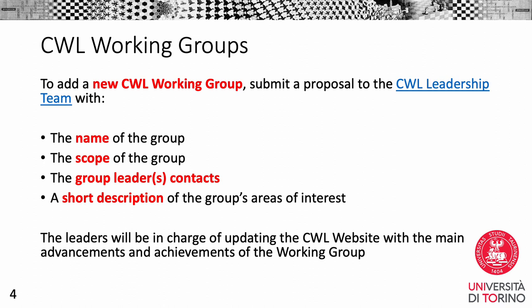Anybody in the CWL community can create a new working group. The process is quite simple: just submit a proposal to the CWL leadership team with the name of the group, the scope — the field of interest that the group wants to discuss — the names of two or three group leaders that will be in charge of updating the website with advancements and achievements and talking directly with the CWL leadership team for approval, and a short description of the main areas of interest of the group.